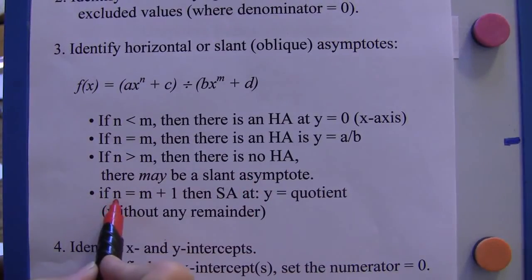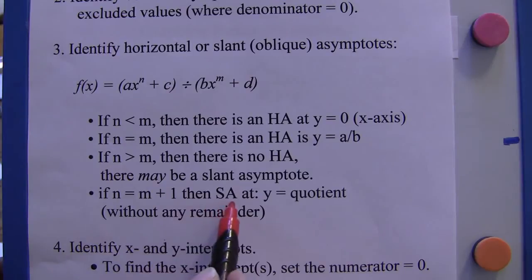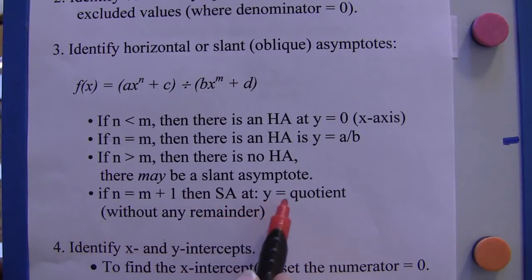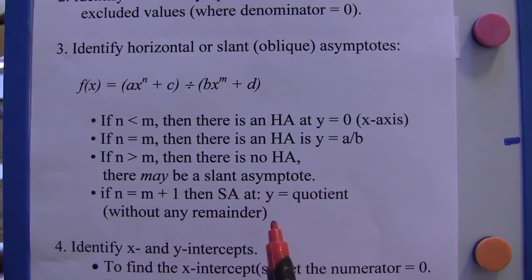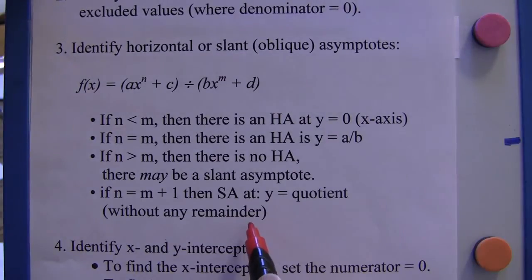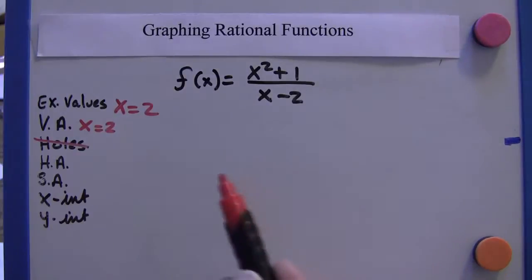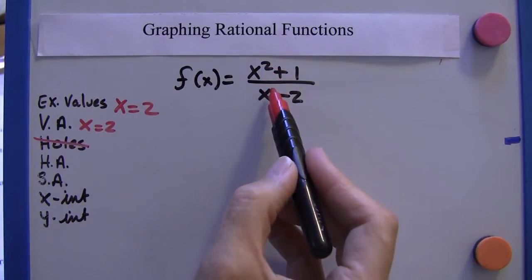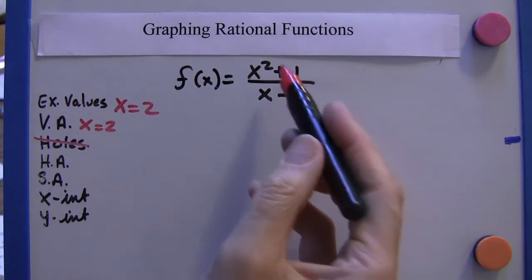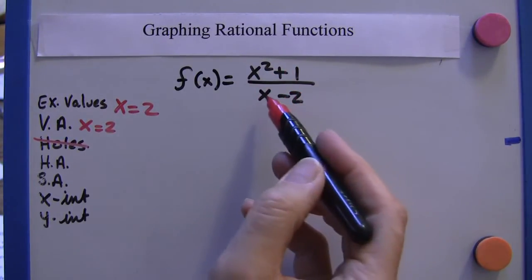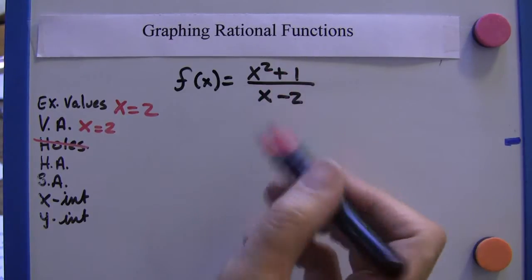That if n equals m plus one, then there's a slant asymptote at y equals the quotient of this rational expression without the remainder. Okay, so this is greater than this by one. So what we want to do is find what happens when we divide x squared plus one by x minus two.